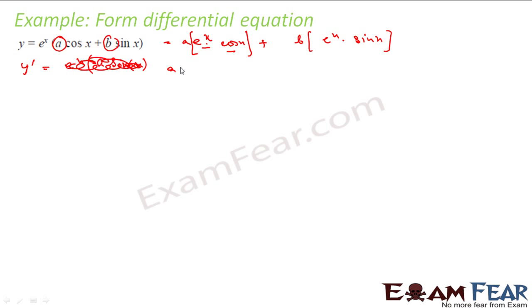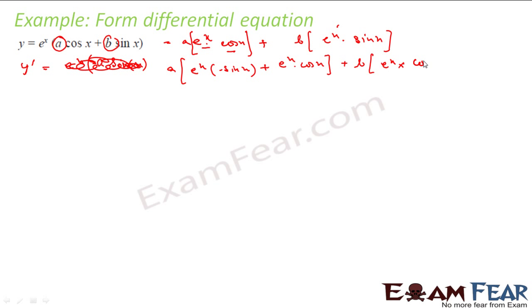Applying the product rule: for a·e^x·cos x, keeping cos x constant gives a·e^x·cos x, and keeping e^x constant gives a·e^x·(−sin x). Similarly for b·e^x·sin x, keeping sin x constant gives b·e^x·sin x, and keeping e^x constant gives b·e^x·cos x. Rearranging by grouping cos x and sin x terms: y dash = e^x[(a + b)cos x + (b − a)sin x].